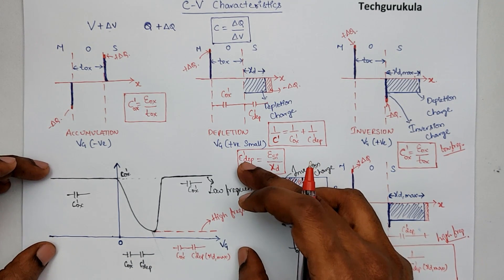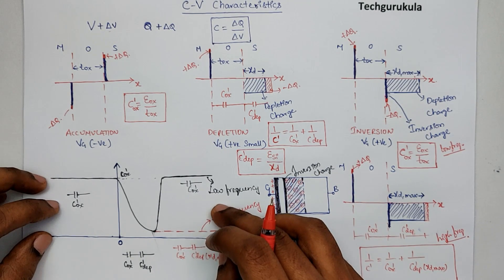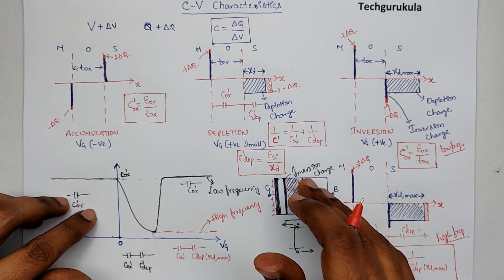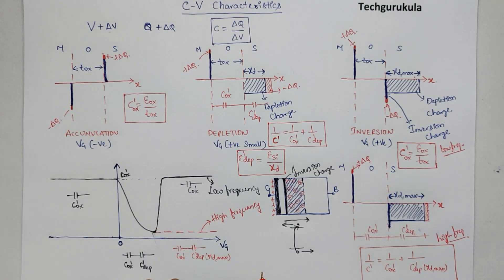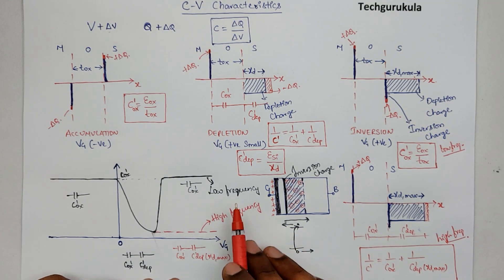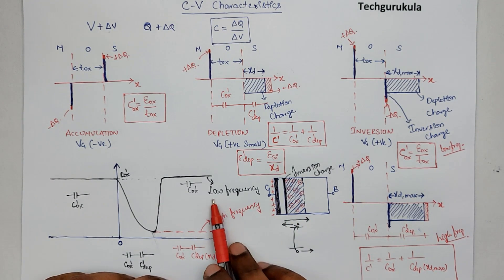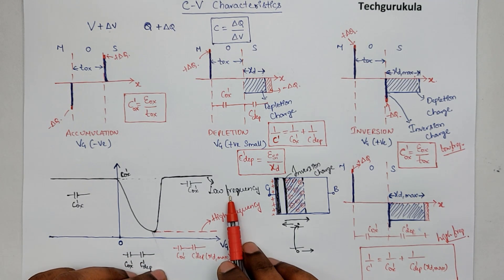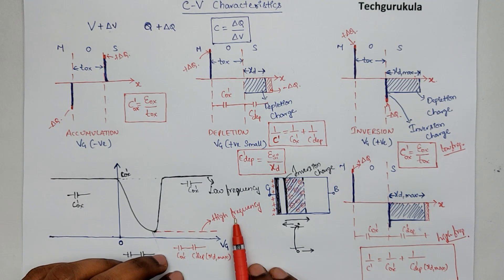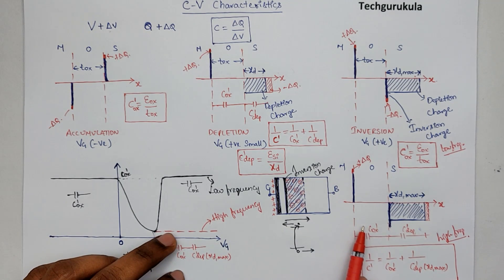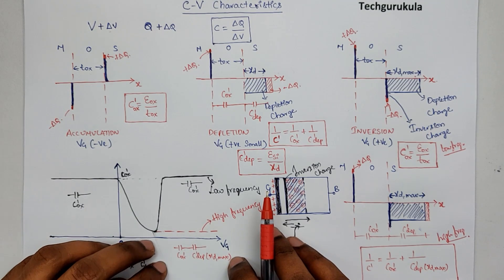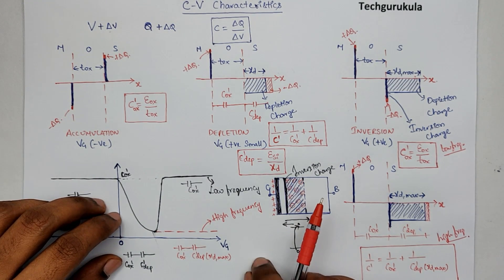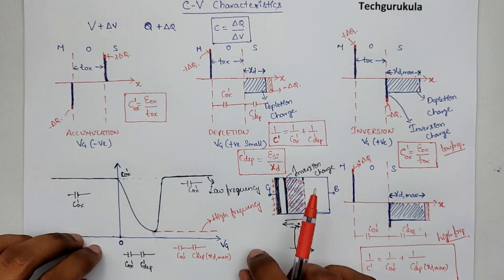When you see the CV characteristics, there is a lot of information you get out of this. There are previous GATE questions solved in this channel in a different playlist — please go through those problems. Also, you might ask: what exactly is low frequency and what is high frequency? You will be surprised — the low frequency here is somewhere around 10 Hz, which is very, very low. Anything above around 100 Hz means you're not going to get the inversion charge dynamically. Then how is MOSFET working at 3 GHz? MOSCAP cannot do that, but MOSFET can — we'll discuss that in detail when we discuss MOSFET.